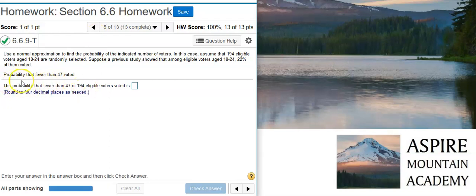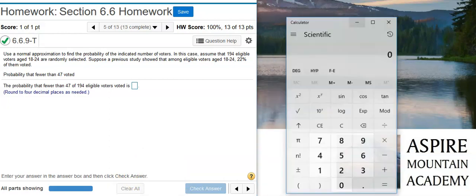Now we're asked to find the probability that fewer than 47 actually voted. To do this, let's first check to make sure our requirements are met for using the normal as an approximation for the binomial.